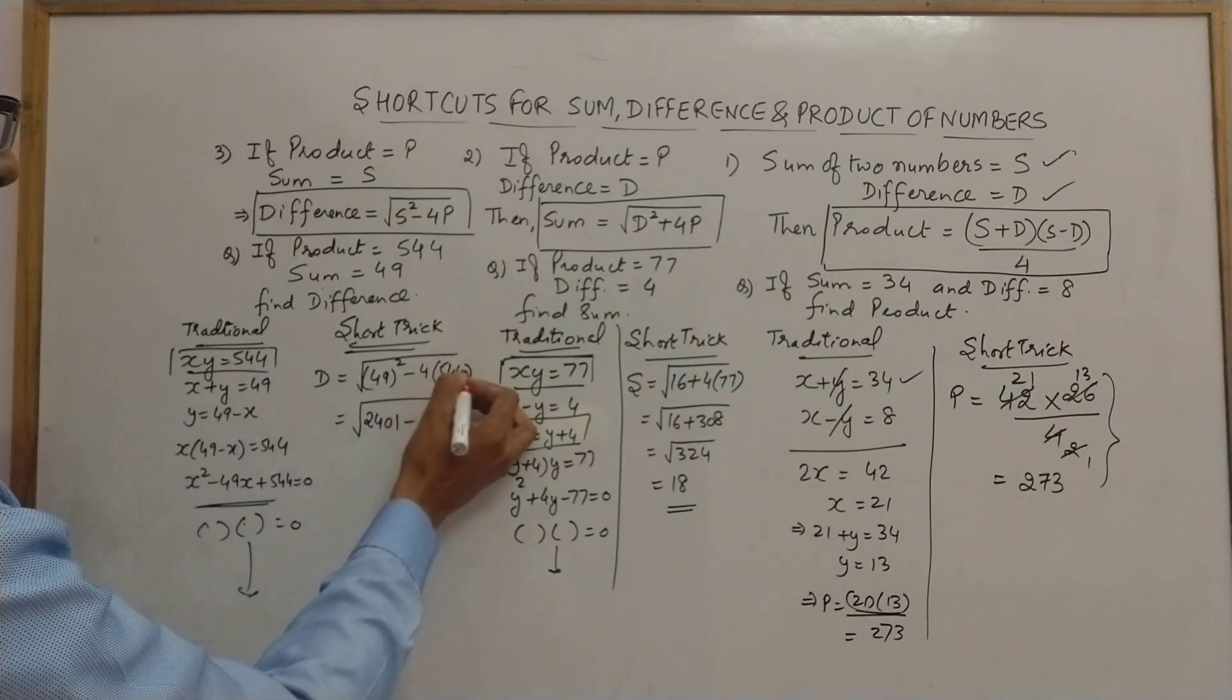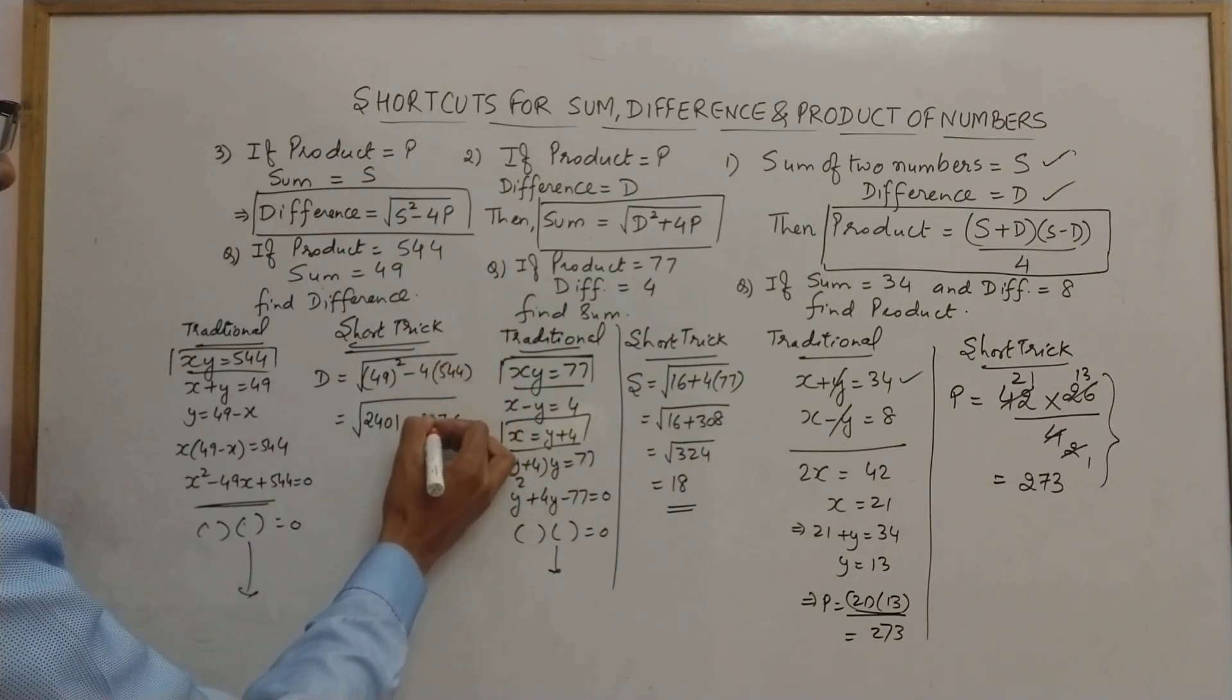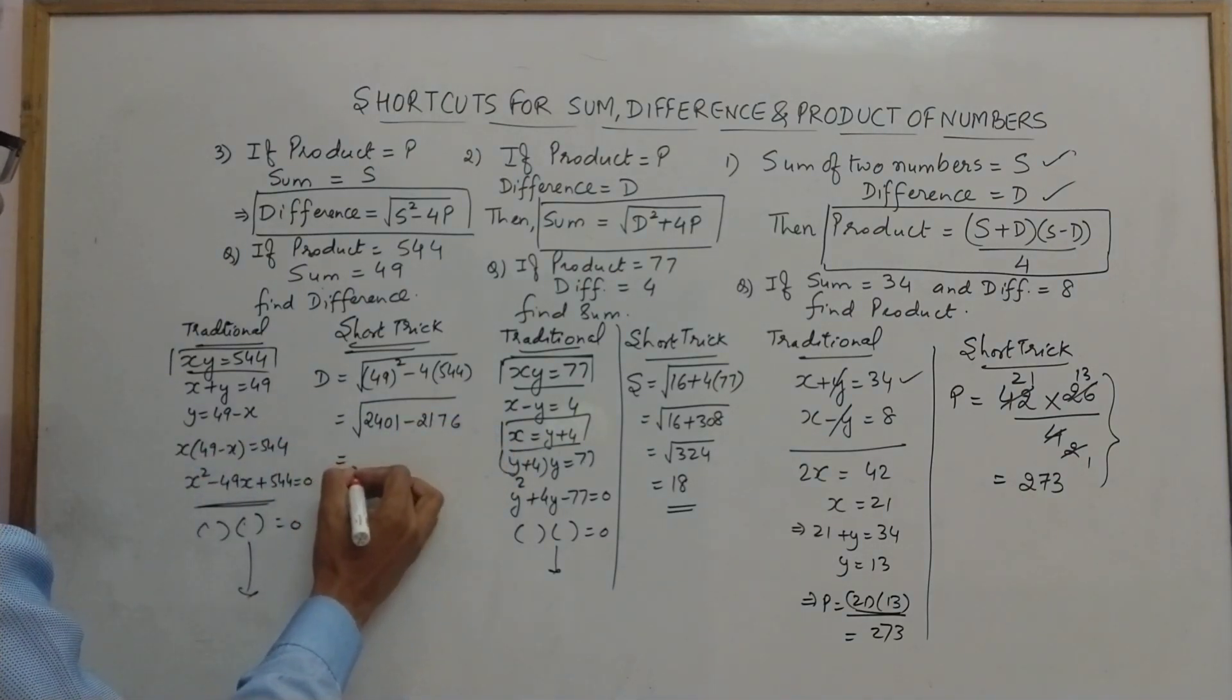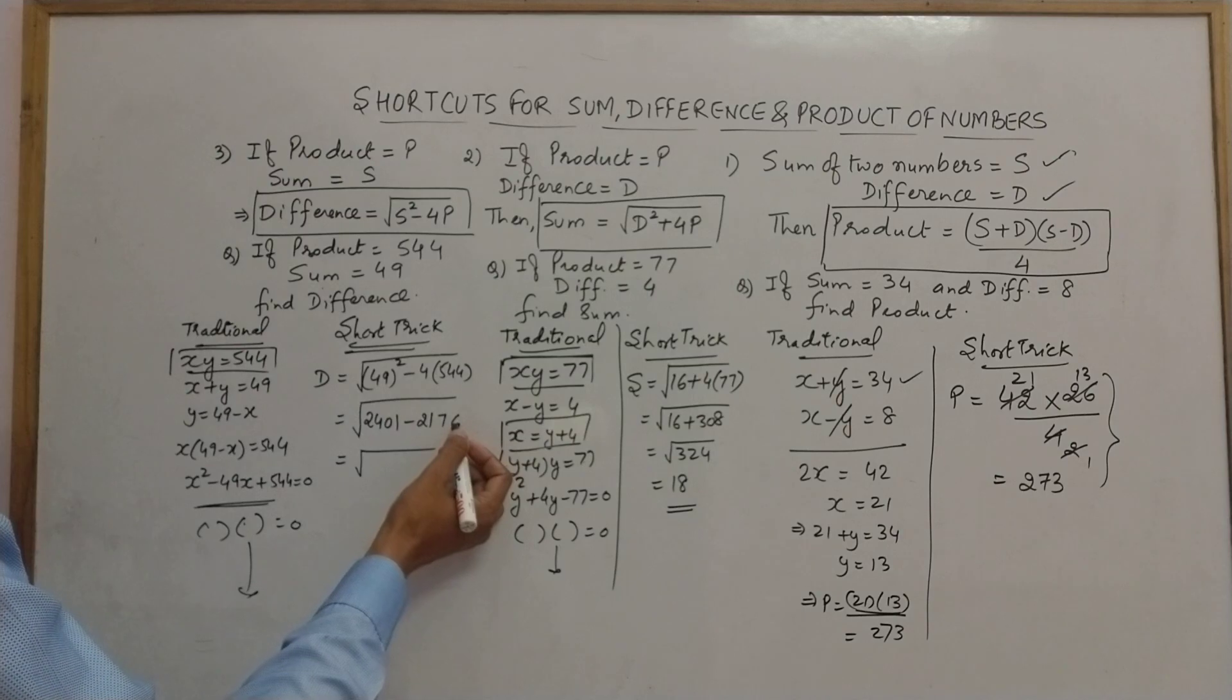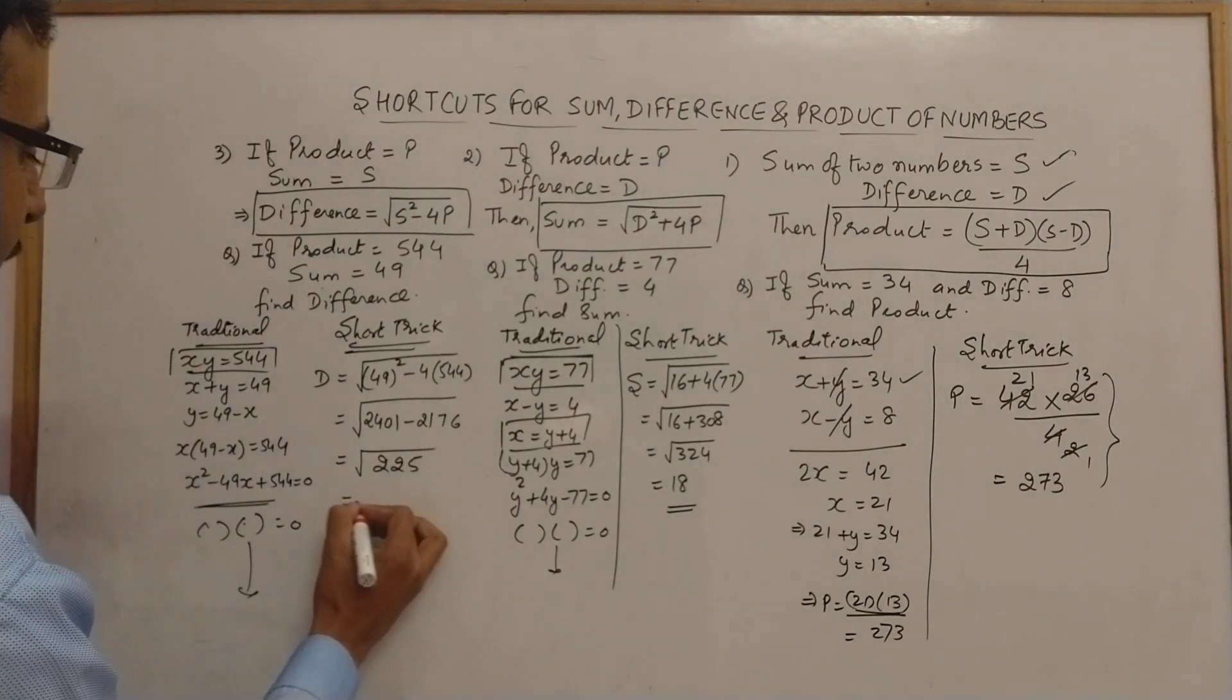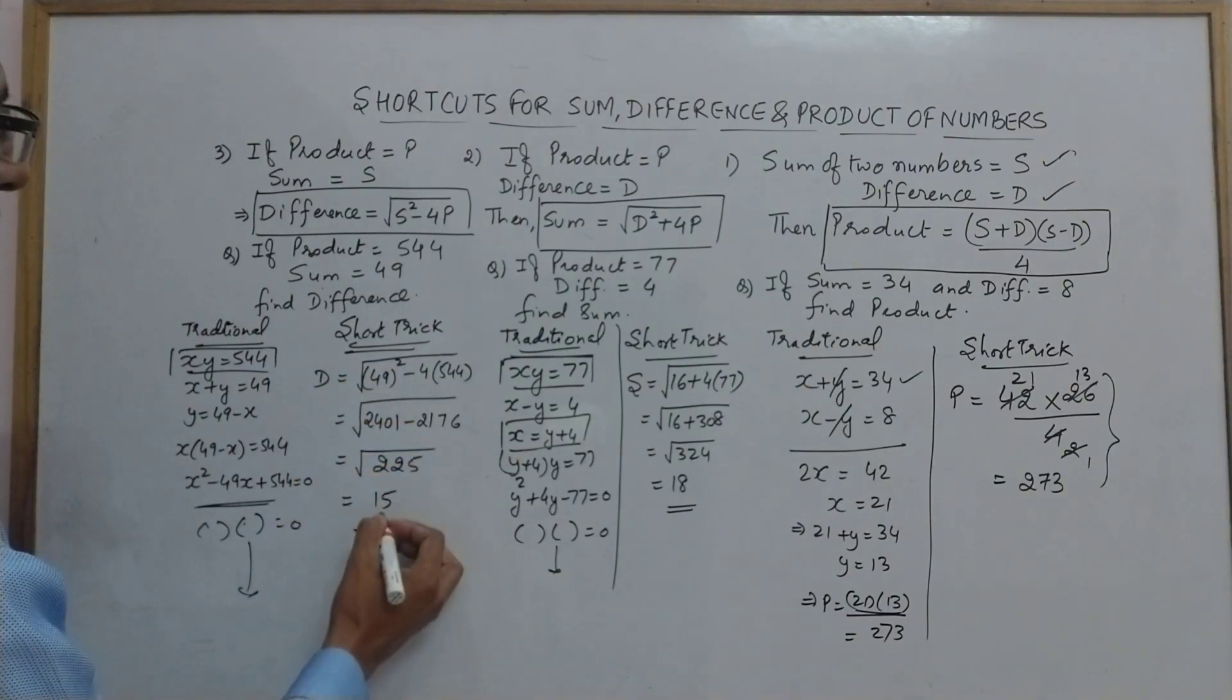This gives √(2401-2176) = √225 = 15. So the difference is 15. We have not found out the two numbers, yet we found that the difference is 15.